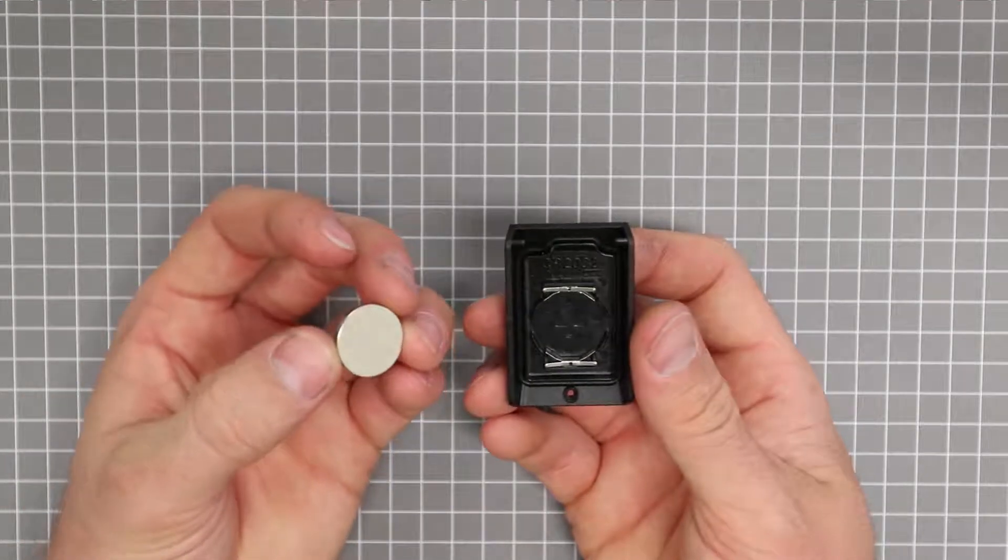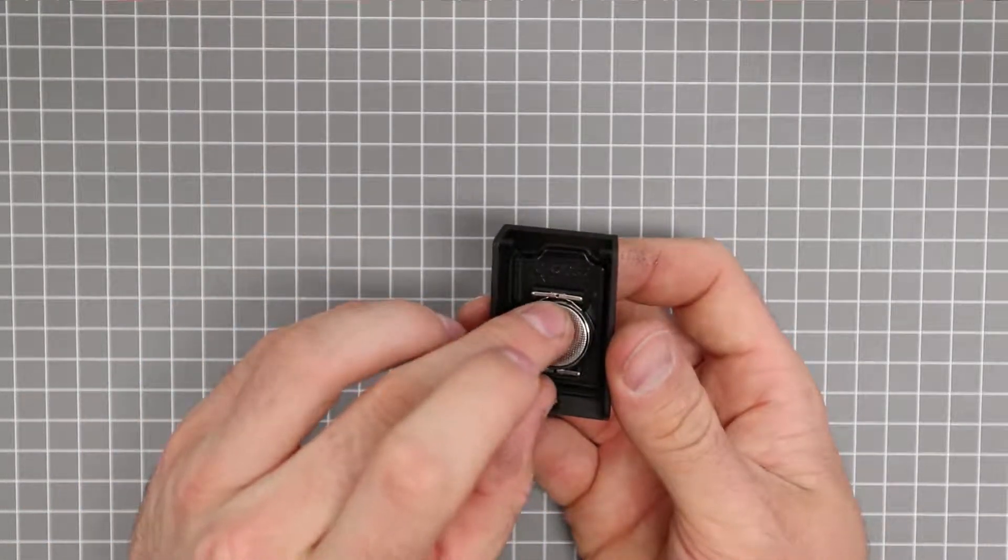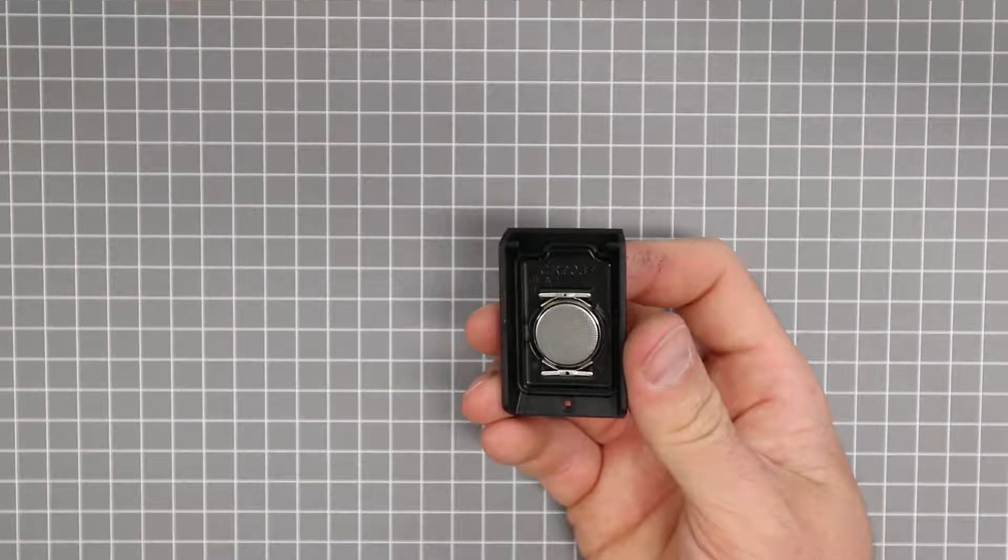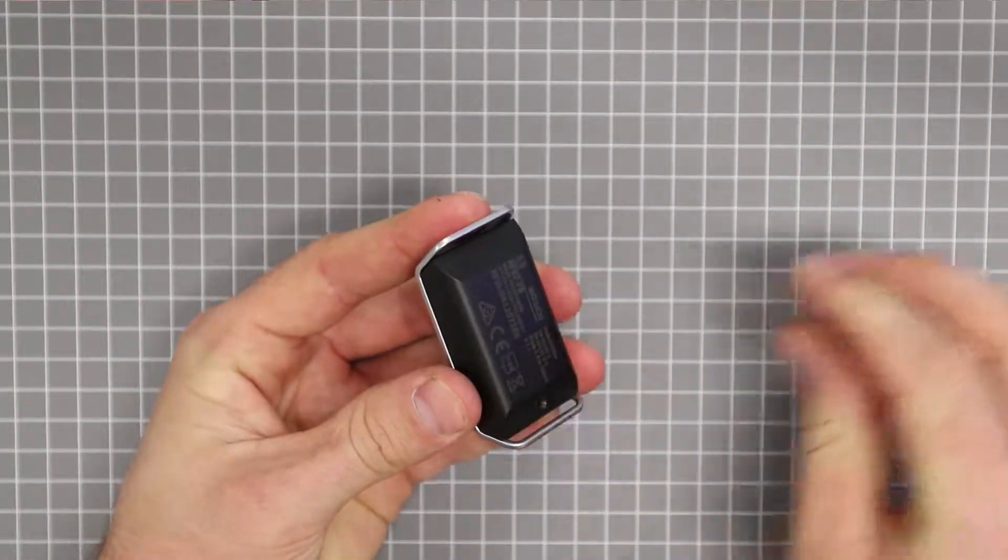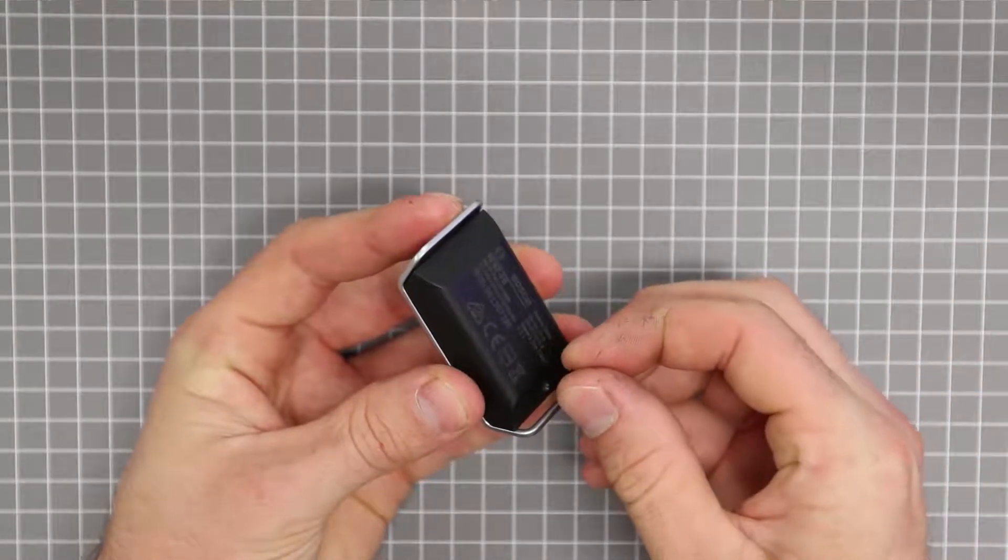Install the new battery making sure it is orientated correctly. On this particular model it is positive side down. Replace the rear cover and insert the screw making sure not to over tighten it.